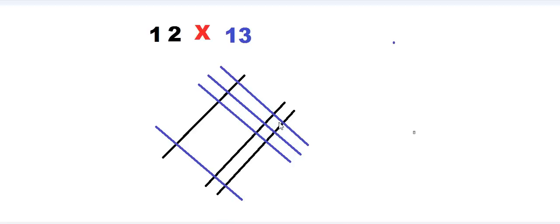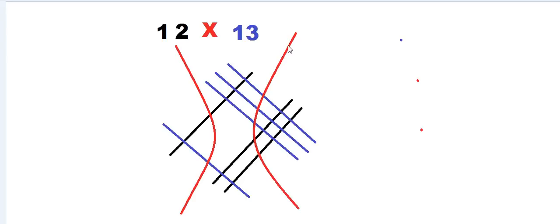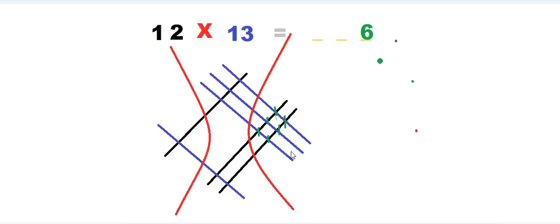Now the most technical part comes in — we have to count the number of intersections. For counting the intersections, first we divide this whole figure into a few parts. In this case, we have three parts. We draw dividing lines here and here, giving us a first region, a second region, and a third region. Now let's count the intersections in the first region — we have one, two, three, four, five, six points, so we write six.